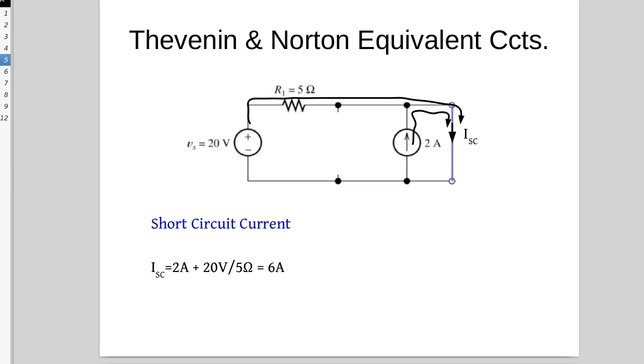Therefore the current from the 20V supply is only limited by the 5 ohm resistor. So 20V over 5 ohms, 4A, 2A from the 2A supply, 6A in total according to Kirchhoff's current law. So we've very quickly found the short circuit current.